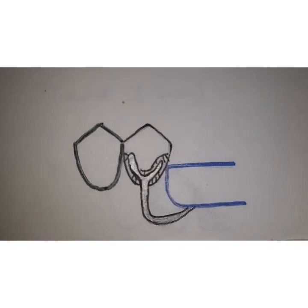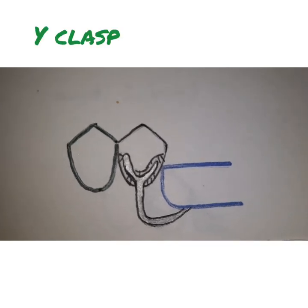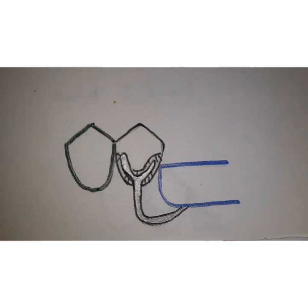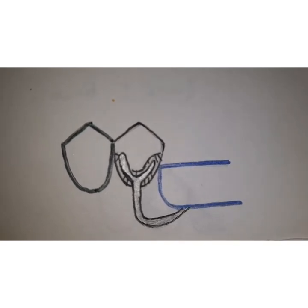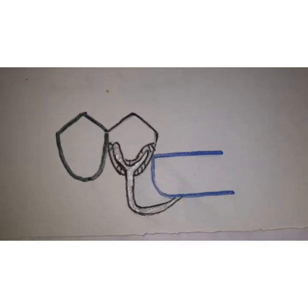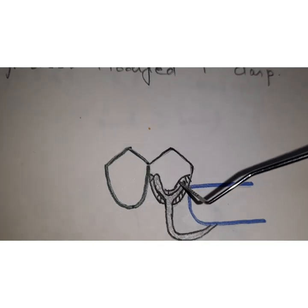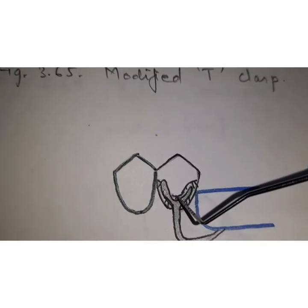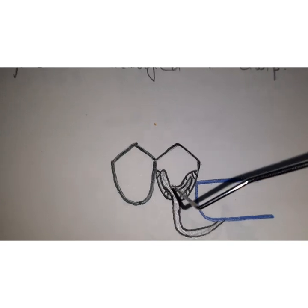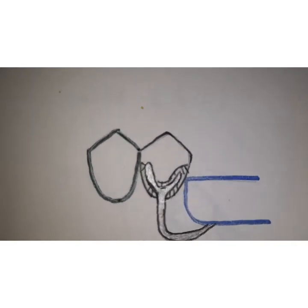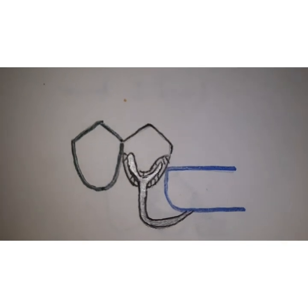The next type of bar clasp is the Y clasp. This is basically the same as the T clasp in all considerations, but here the difference is the height of contour — it is high on both the mesial and distal surfaces but very low in the middle. This is the reason a Y clasp is required: when the height of contour is more on the mesial and distal aspects but very low in the center. All other considerations are the same as for the T clasp.